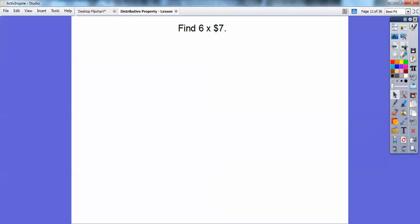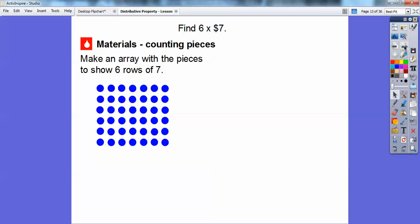We're going to find 6 times 7 using the distributive property. Our materials are going to be some counting pieces. I have some little circles I'm going to use, and I'm going to make an array with pieces showing six rows of seven. Here's six rows of seven. One, two, three, four, five, six going down, and then seven going across. This will represent our 6 times 7.